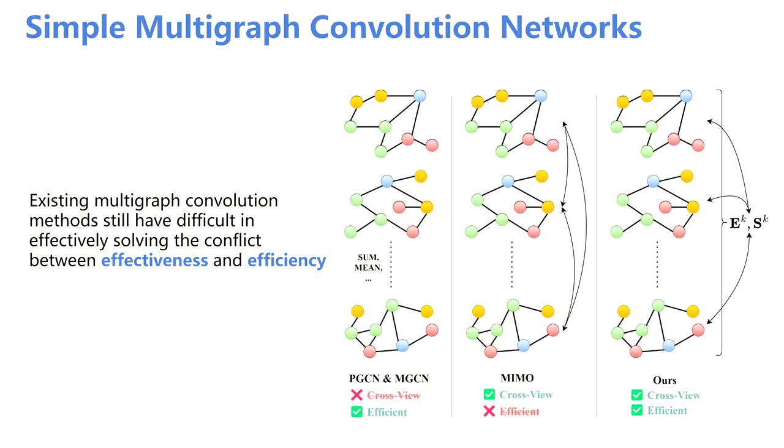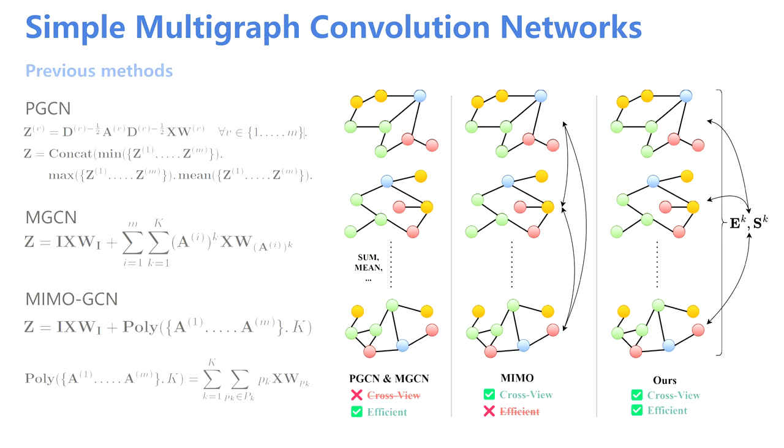Convolution methods still have difficulty effectively solving the conflict between effectiveness and efficiency. Previous methods like PGCN ignore cross-view interaction, and other methods like MGCN and MIMO-GCN involve cross-view interaction but are too complex to use in practice.